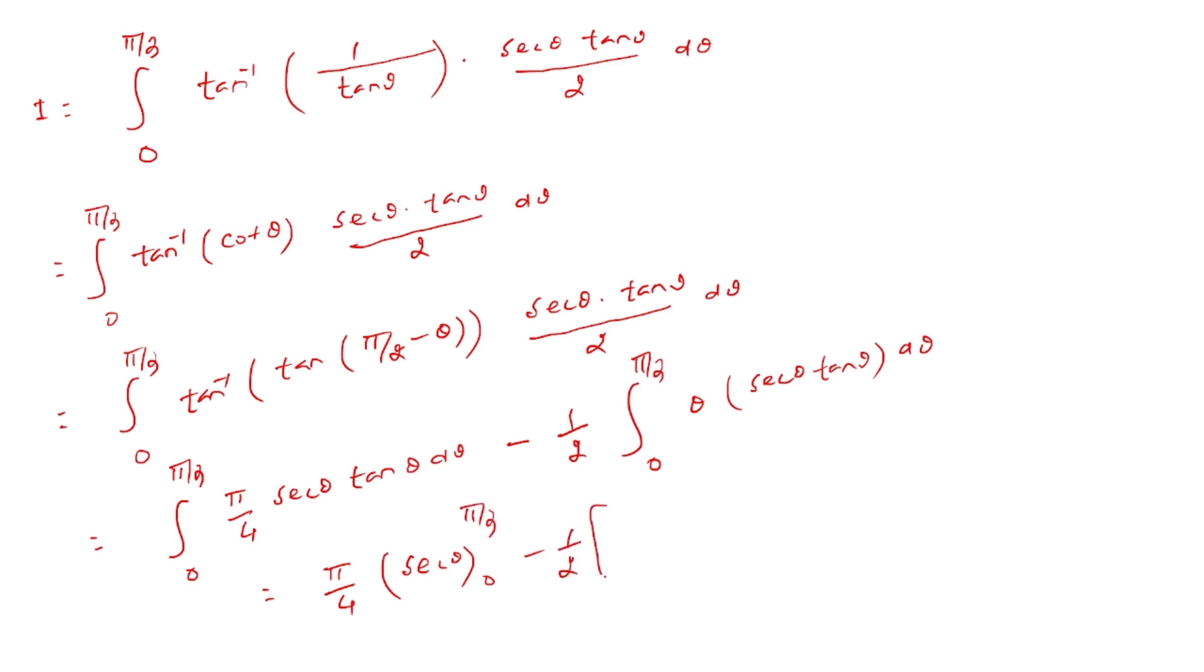Minus 1/2 times integration by parts: θ sec θ minus integral of 1 times sec θ. The integration of sec θ is log(sec θ + tan θ), evaluated from 0 to π/3.